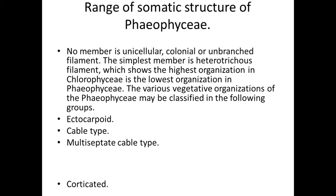The fourth type is the corticate type, represented by species like Arthrocladia. In the lower region of the plant body, lateral branches arise and coil around the main axis, forming a compact pseudoparenchymatous cortex around the main axis.